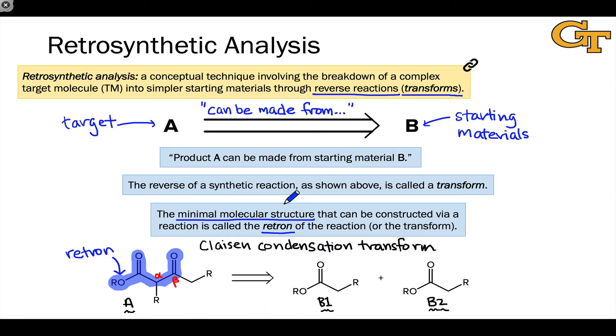As you learn new reactions and think about applying them in synthesis, it's really important to think about what the retron of the new reaction is. What fundamental structure, what minimal structure is created by this reaction? Thinking about that and even explicitly noting it down will help you apply that reaction in the synthesis of a complex target because you'll start to see the potential for using that reaction within complex structures.